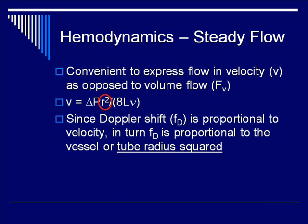As you'll learn in the next lecture on Doppler flow, it is more convenient to express flow in terms of velocity rather than volume. By rearranging the equation, the velocity of blood flow V equals delta P times R squared, the radius of the lumen squared, divided by 8 times L times the viscosity. Since the Doppler shift f(d) is proportional to velocity, the Doppler frequency is proportional to R squared as well.